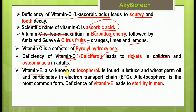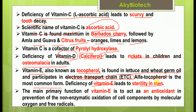Vitamin E is found in lettuce and wheat germ oil, and participates in the electron transport chain (ETC) — this is an important function. Alpha-tocopherol is the most common form. Deficiency of vitamin E leads to sterility in men. The main primary function of vitamin E is to act as an antioxidant, preventing non-enzymatic oxidation of cell components by molecular oxygen and free radicals.